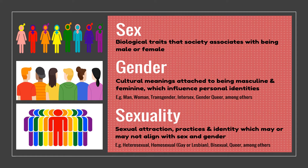According to Lumen Boundless Psychology, sexuality refers to the capacity of sexual feelings and attraction, which is different from biological sex — which refers to how one's anatomy, hormones, and genetics are classified, typically as male or female — and from gender identity, which is a person's sense of their own gender or social-cultural classification like man, woman, or another gender.